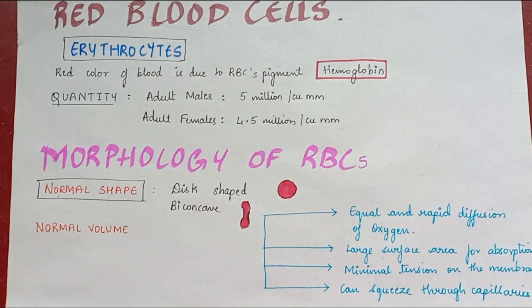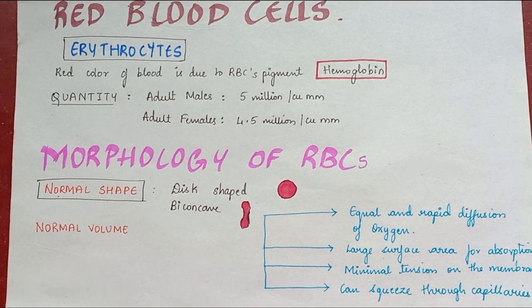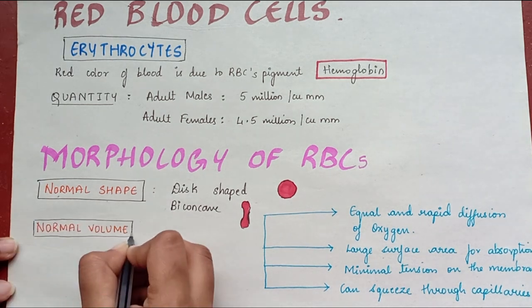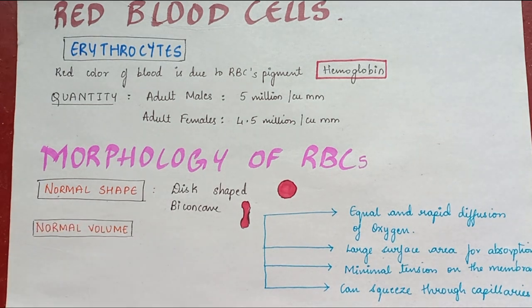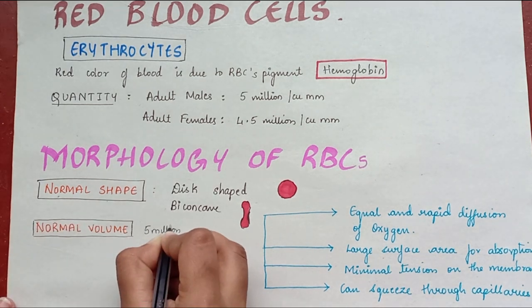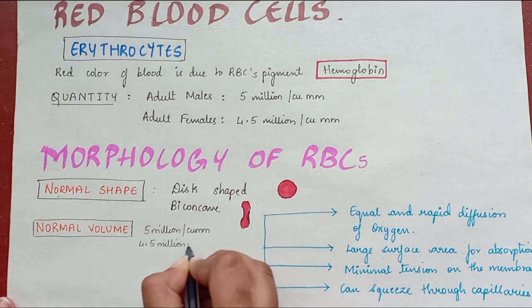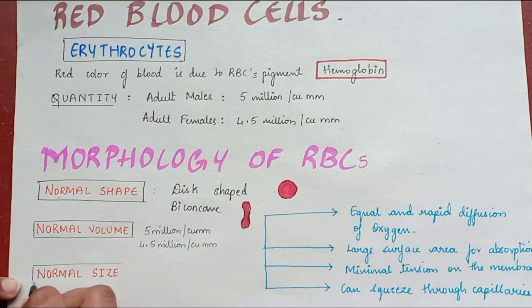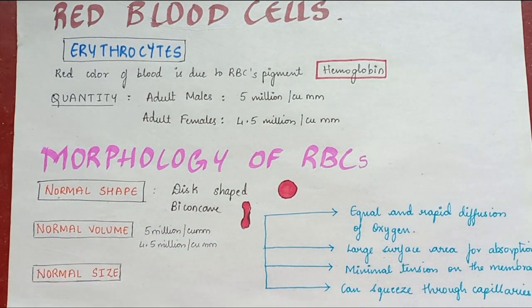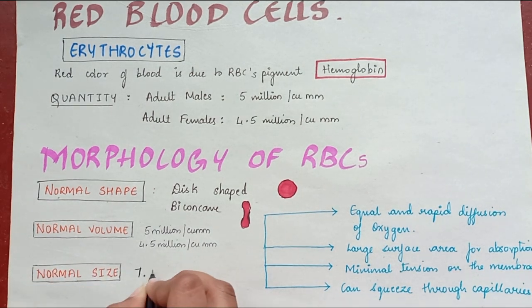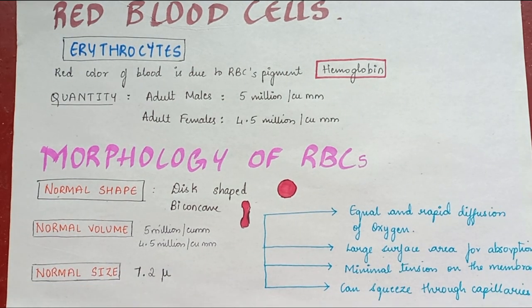Normal volume is 5 million per cubic millimeter in males and 4.5 million per cubic millimeter in females, as mentioned earlier. The diameter of an RBC is 7.2 microns.